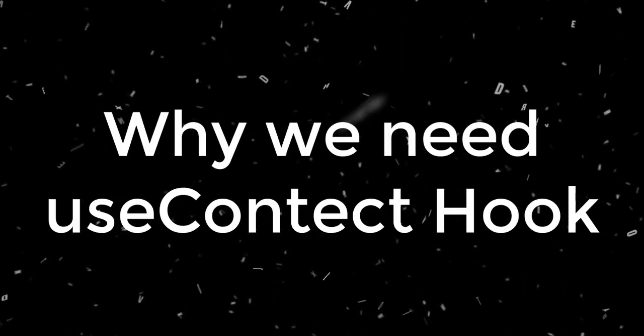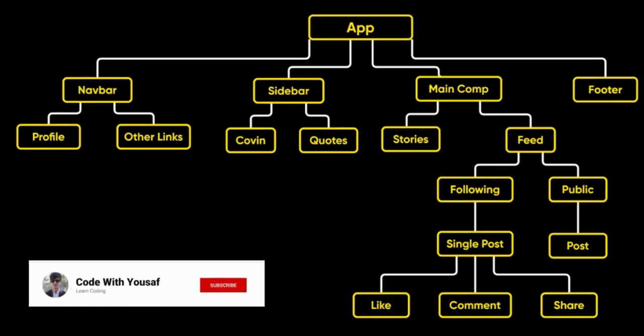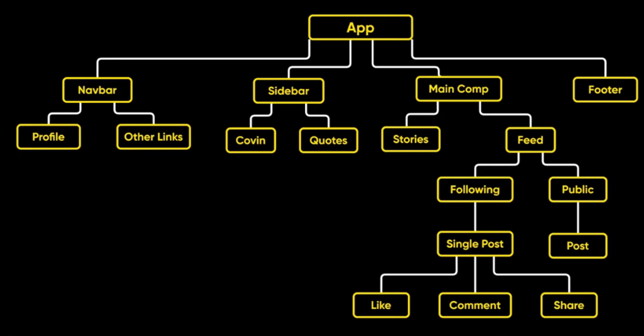Why do we need the useContext hook? In this image you can see a hierarchy of components. The parent is the app, then we have children components. The data is in the app component, and you want to access it in a single post component which is at the bottom. It is hard to pass data one by one — from app to main, then from feed to following — all the way down to the single post component.